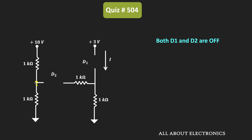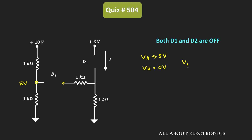In this condition, the voltage at this node is equal to 5V, because these two resistors are not connected with any other circuit. Simply using the voltage divider rule, it is easy to find the voltage at this node. So the voltage at the anode of diode D2 is equal to 5V, while the cathode is connected to ground, so the cathode voltage is 0V.